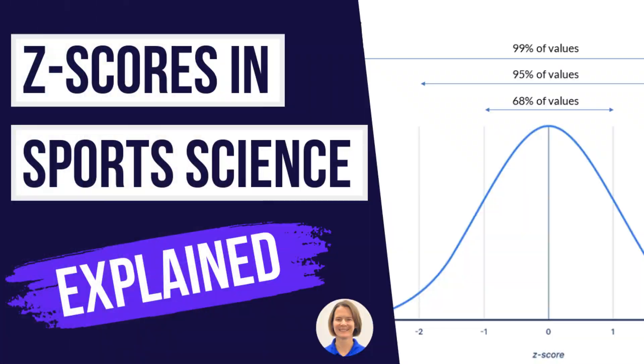I've previously talked about Z scores and gone through how you calculate them and how you can use them. If you're not familiar with them, or you haven't already watched that video, I'll pop a link below. Today, we're going to look at the next step — taking your Z score and converting it into either a STEN score or a T score. And these can be even more useful for feeding back your information in a really clear manner.